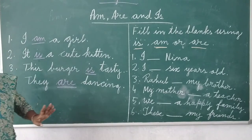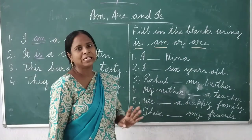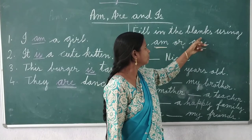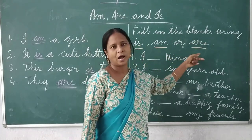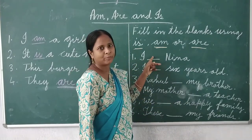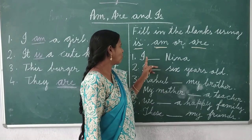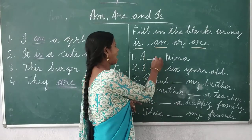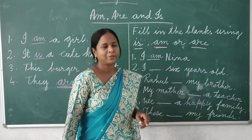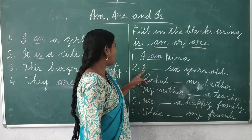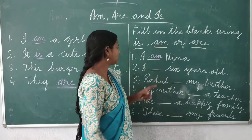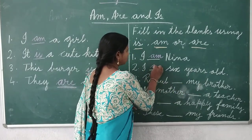Now let's fill in the blanks using is, am, or are. Here: 'I __ a student' — 'I' is talking about ourselves, so we write 'am'. Next: 'I am 6 years old' — same thing, talking about ourselves, so we use 'am' here.